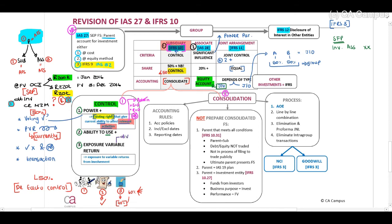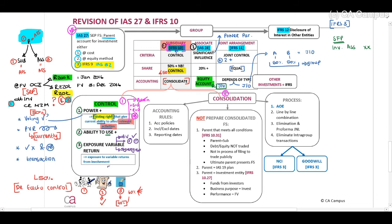Variable returns can be dividends — yes, this is true. But if you think about dividends, I can have an investment in a JSE-listed company and receive dividends, but that does not mean that I have control. Variable returns will include both profits as well as losses — positives and negatives. This will be when there are synergies between these companies that will result in a return for our entities. It is important that you understand that variable returns can include a lot of things. Therefore, if there is a theory question, it is important that you include your example when you answer the question.